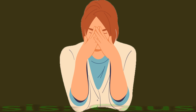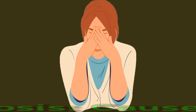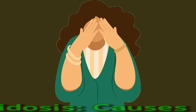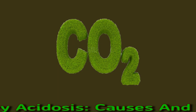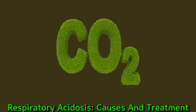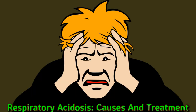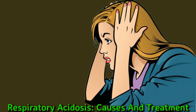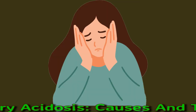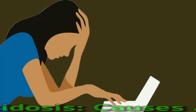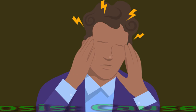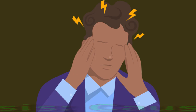Respiratory acidosis: causes and treatment. Respiratory acidosis is when breathing out does not remove enough carbon dioxide from the body, and the leftover carbon dioxide causes high levels of acid in the blood. Many medical conditions and situations can lead to this. Chronic obstructive pulmonary disease, or COPD, is particularly likely to cause respiratory acidosis. This video looks at the causes, symptoms, and treatment options.